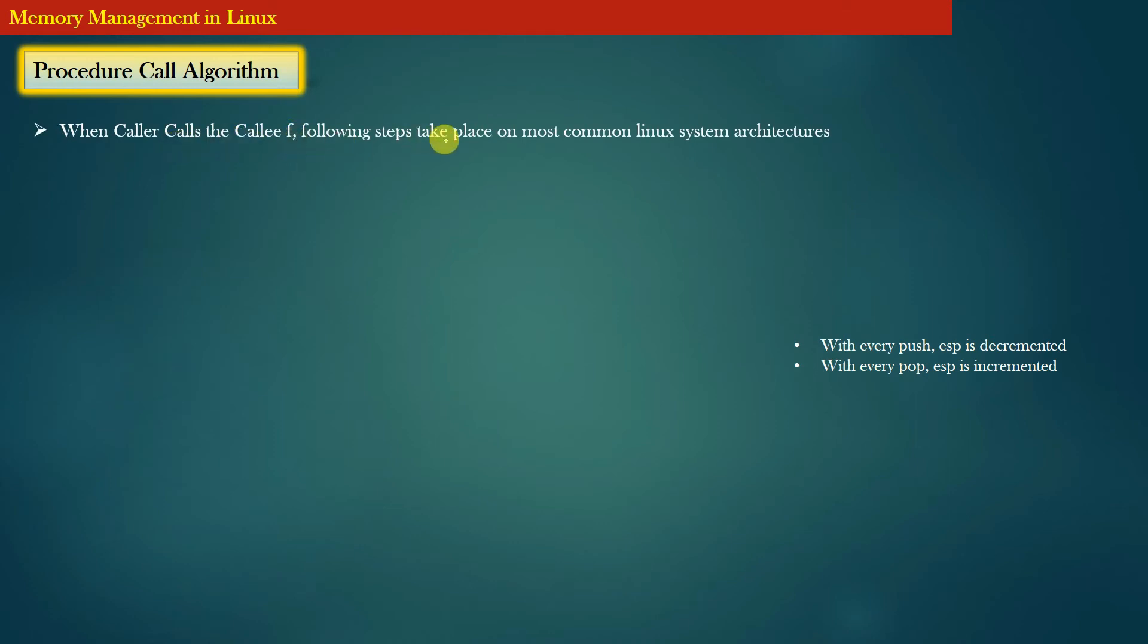Following steps take place on most common Linux system architectures. In order to set up a stack frame of the callee function into the stack memory, the very first thing that caller needs to do is to push the arguments of the callee function in the reverse order in the stack memory. This operation is performed by the caller function itself.